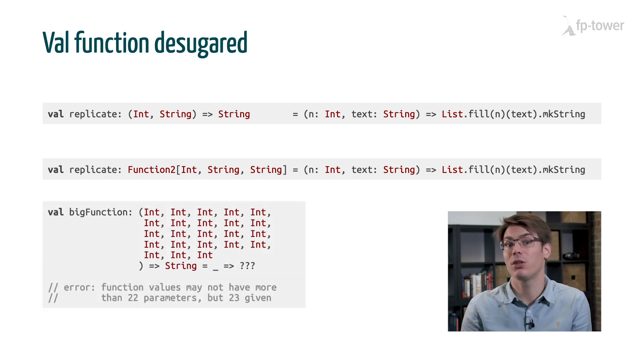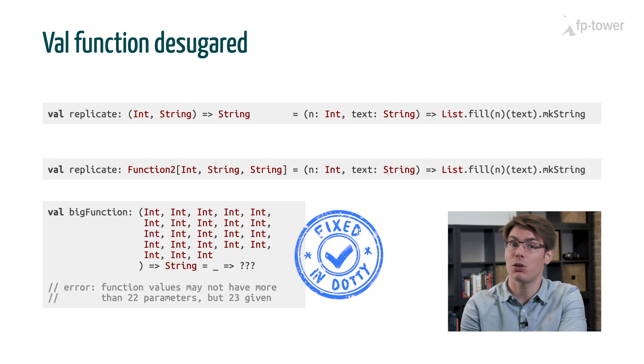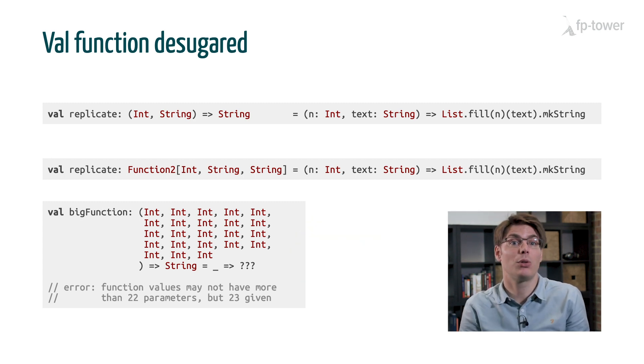As a side note, we cannot have more than 22 arguments with a val function in Scala. It's not really a strict limitation, because we generally don't need that much. But the good thing is, in DOTI or Scala 3, this limitation has been lifted, so we'll soon be able to create functions with as many arguments as we want.